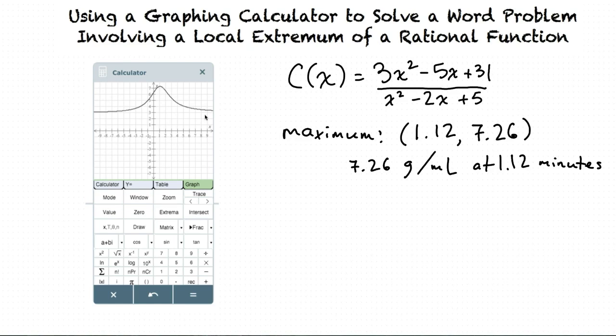To confirm this horizontal asymptote, we can use our function. Because the degree on the numerator is the same as the degree of the denominator, we can divide the leading coefficient of the numerator by the leading coefficient of the denominator to get our asymptote. So, when we do this, we get that the asymptote is indeed c of x equals 3.